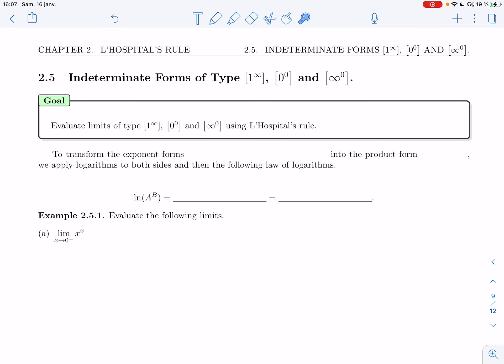So 2.5, I want to look at indeterminate forms of type 1 to the infinity, 0 to the 0, and infinity to the 0. Our goal is to evaluate these types using L'Hospital's rule. To transform the exponent forms, again, let's write them down. It's important to remember them: 1 to the infinity, 0 to the 0, and infinity to the 0. We want to transform them into the product form 0 times infinity.